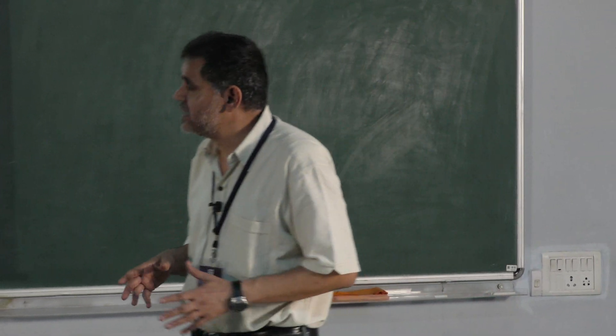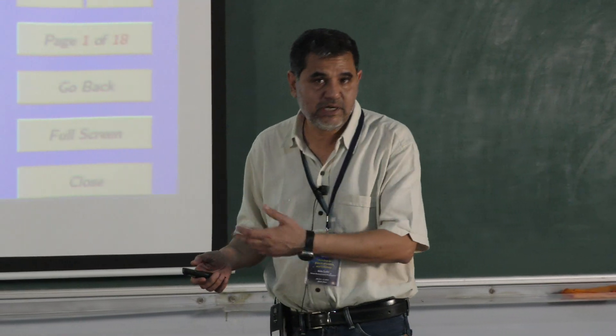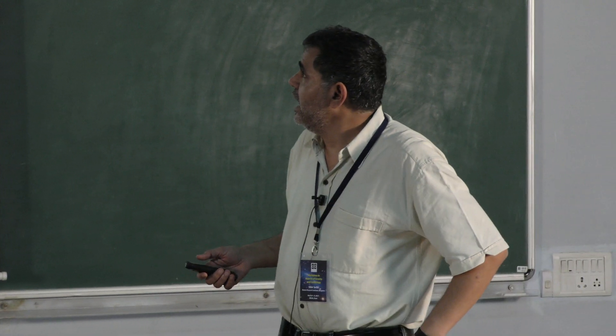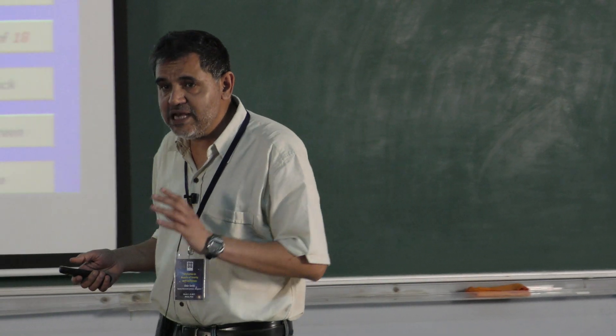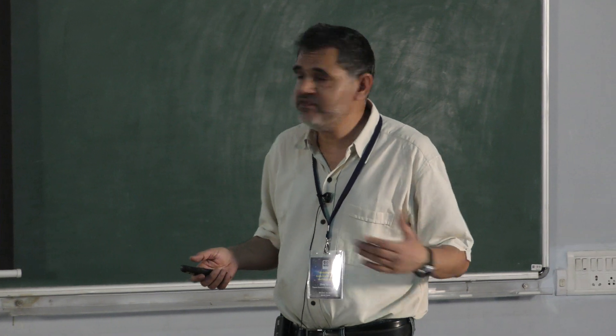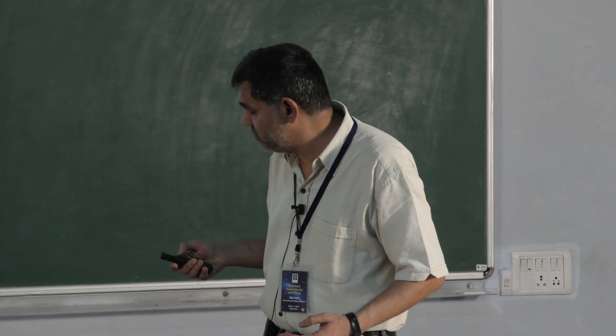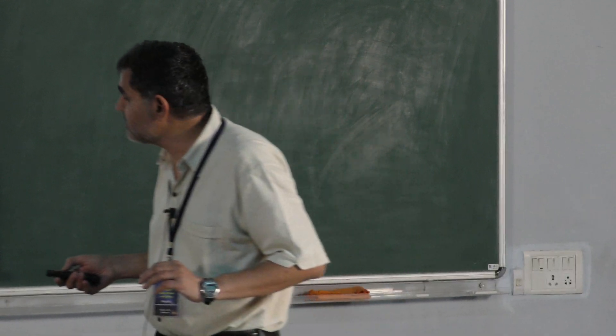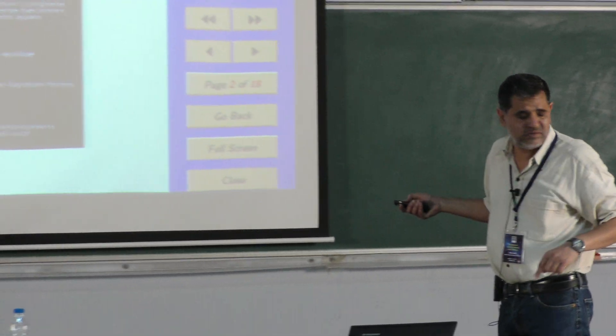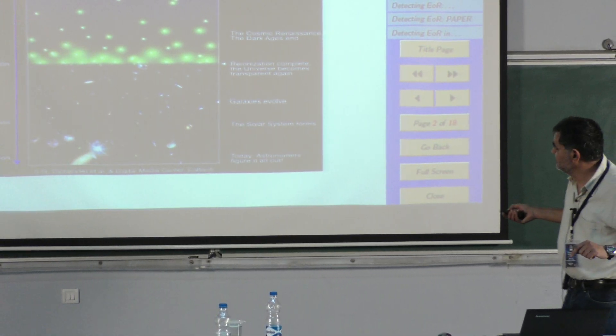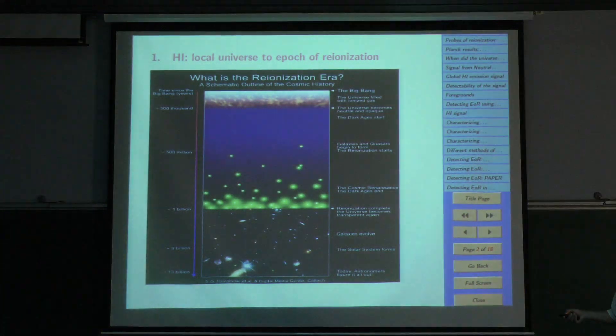So the focus of my talk would be detecting epoch of ionization in redshifted H1 line. Two speakers have already talked about this, Tirth and Hamsa. They mentioned different aspects of the problem. My focus would be somewhat different. My focus is mainly on how to detect it, what are the ongoing efforts to detect it, including our own effort using MWA.